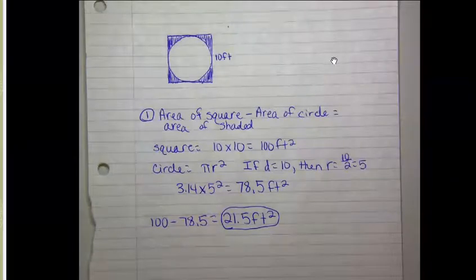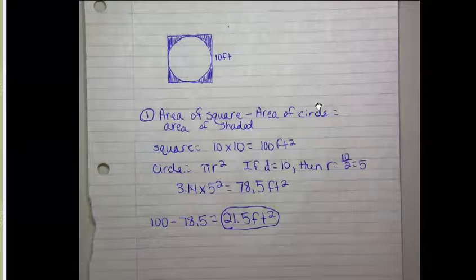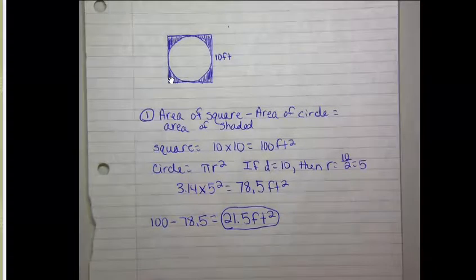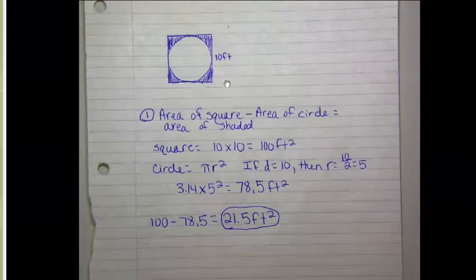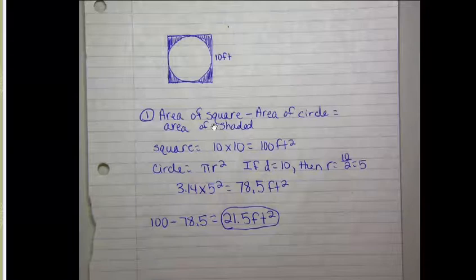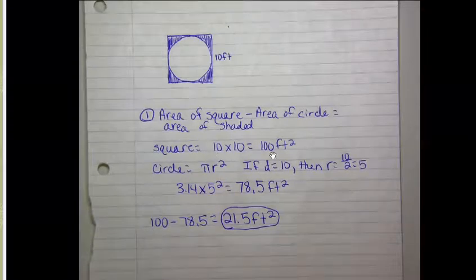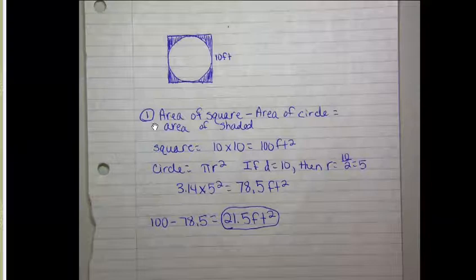Here are my notes. The area of the square minus the area of the circle is what we need to find the shaded area. For the area of the square, since one side is 10 feet, all sides are 10 feet, so length times width: 10 times 10 is 100 feet squared.